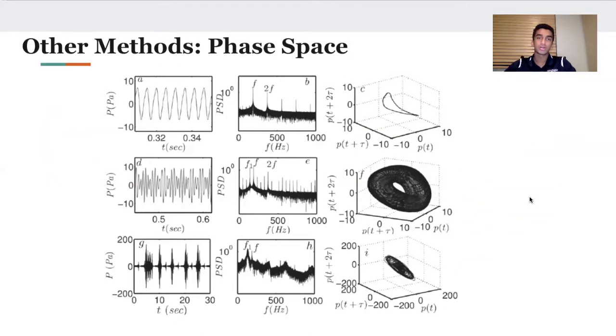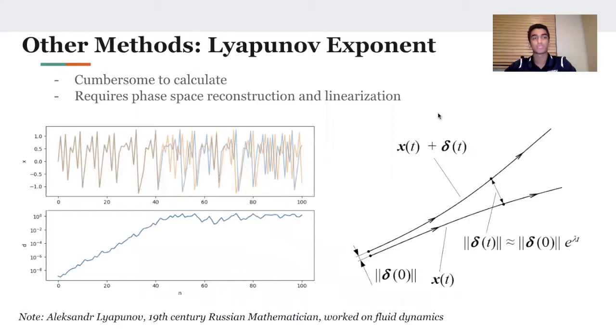Another popular method for detecting chaos is phase space reconstruction. You construct a coordinate system corresponding to the dimension of your system, which is pretty cumbersome and hard to do. Using the 0-1 test, you don't have to do this. The Lyapunov exponent, named after Alexander Lyapunov, a 19th century Russian mathematician who worked on fluid dynamics, does require phase space reconstruction and linearization. This tests for sensitive dependence on initial conditions. If you have two initial points arbitrarily close, how fast are they going to diverge as the system undergoes multiple iterates? After a certain number of iterates, their orbits might diverge wildly, which is what this tells you.